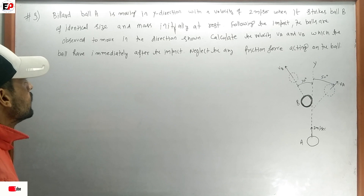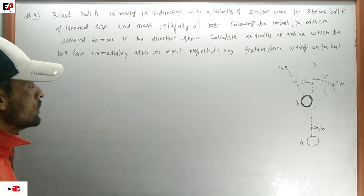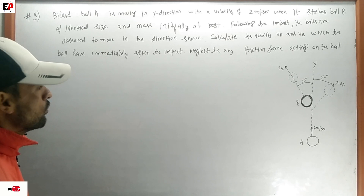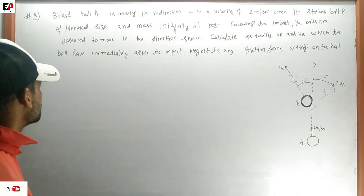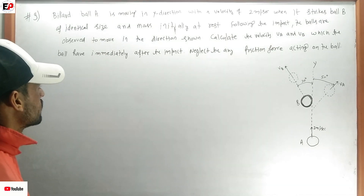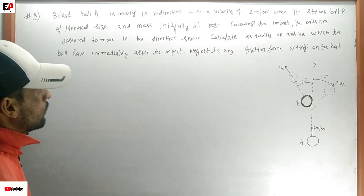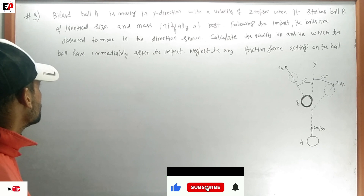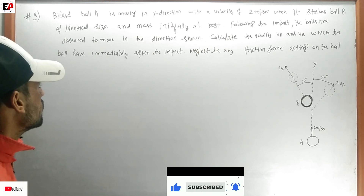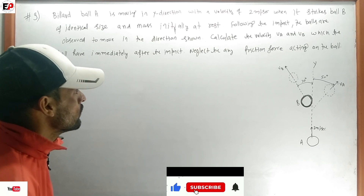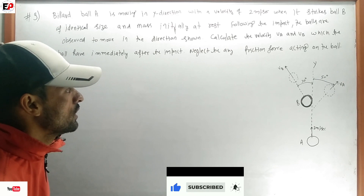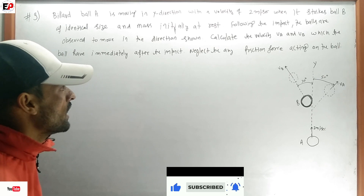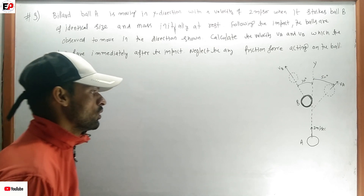Billiard ball A is moving in the Y direction with a velocity of 2 meters per second. When it strikes ball B, which is of identical size and mass and initially at rest. Following the impact, the balls are observed to move in the direction shown. Calculate the velocity VA and VB which the balls have immediately after the impact. Neglect any friction force acting on the balls.